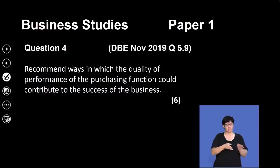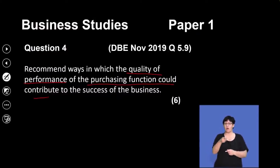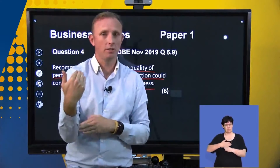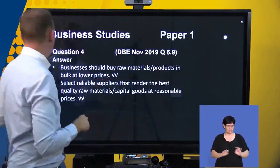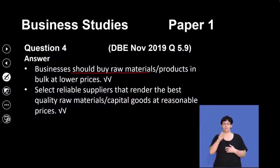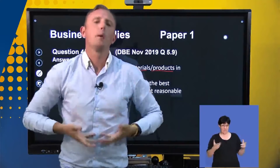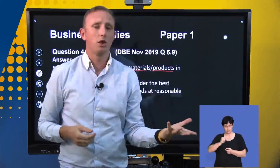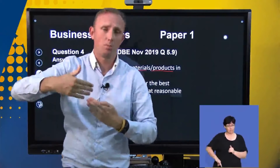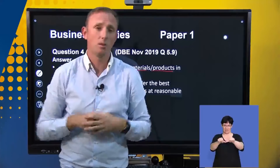The next question is: recommend ways in which the quality performance of the purchasing function could contribute to the success of the business. We're looking at how the purchasing function can add to quality. Firstly, businesses should buy raw materials or products in bulk at lower prices. Buying in bulk means getting products cheaper; if we get products for cheaper, we make more profit, which increases the sustainability of the business and helps prevent big financial losses during economic downturns.